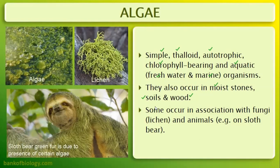Some algae form associations with fungi, creating lichens. In a lichen, the fungal partner provides protection and mineral absorption, while the algal partner contributes through photosynthesis. Some algae are also in association with animals — for example, on a sloth bear, the green color is due to the presence of algae. The lichen has both a fungal partner and an algal partner working together.